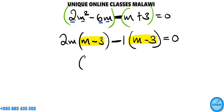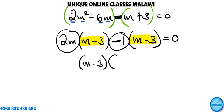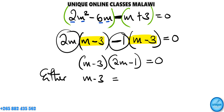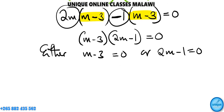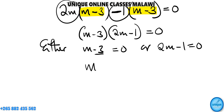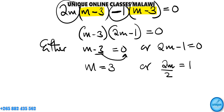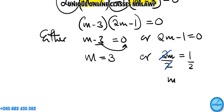We can see the brackets are the same, so we factor them out: (m minus 3)(2m minus 1) equals zero. Therefore either m minus 3 equals zero, giving m equals 3, or 2m minus 1 equals zero, giving 2m equals 1, so m equals one half.